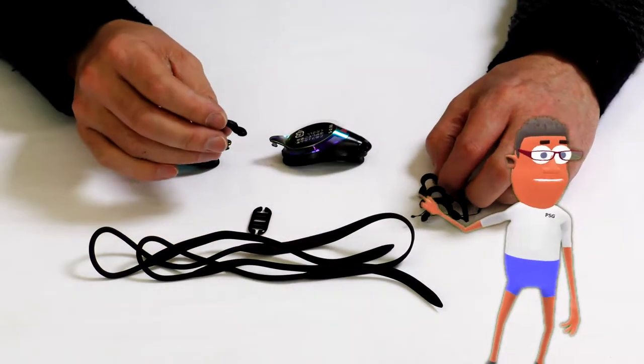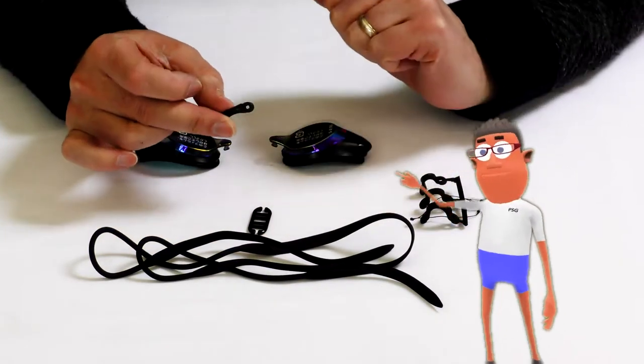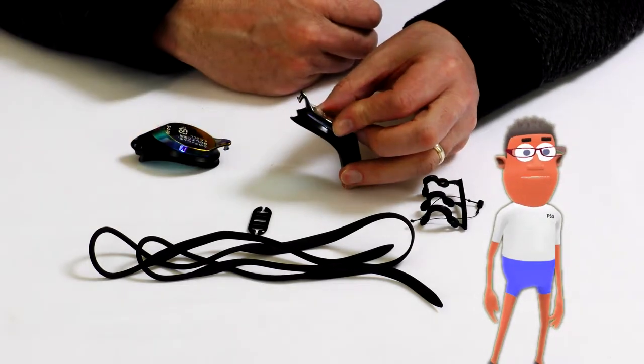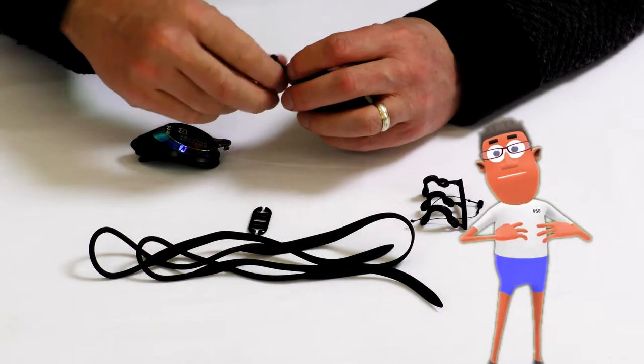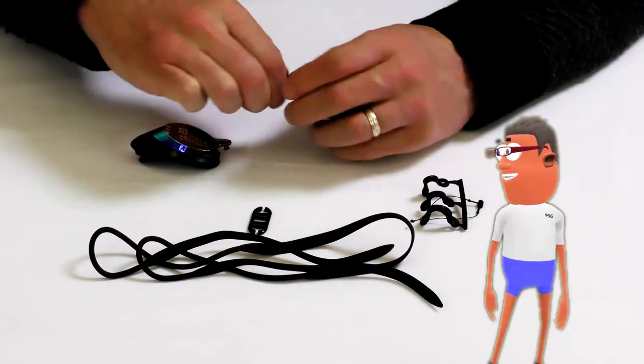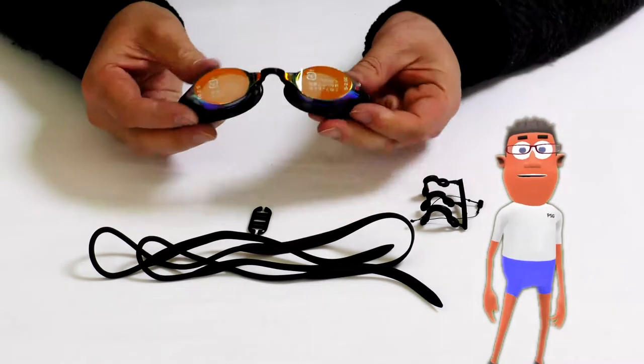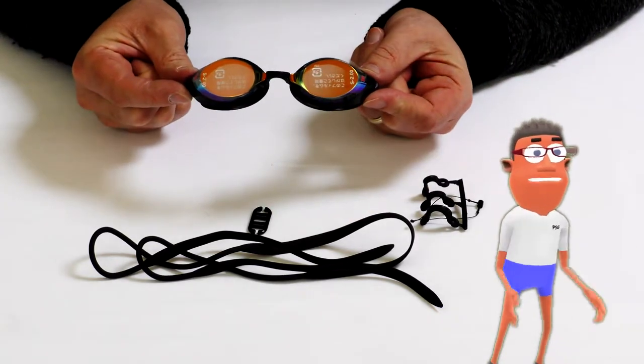First, you take a nose bridge. They have a little hole in the end, and that clips onto the post on the end of the lens. That clips into place, and you do the same on the other eye. You have two pieces clipped together.